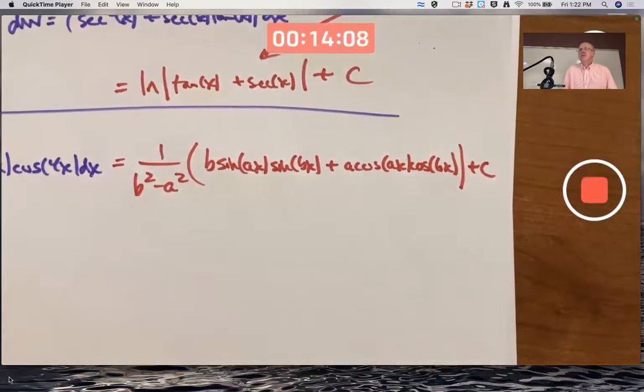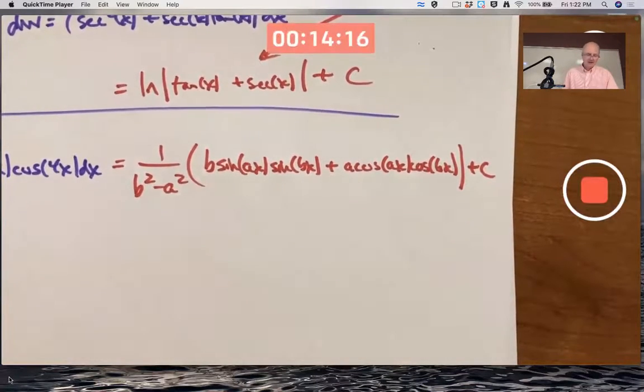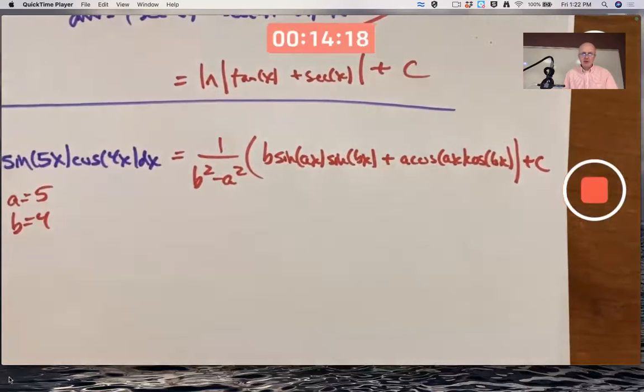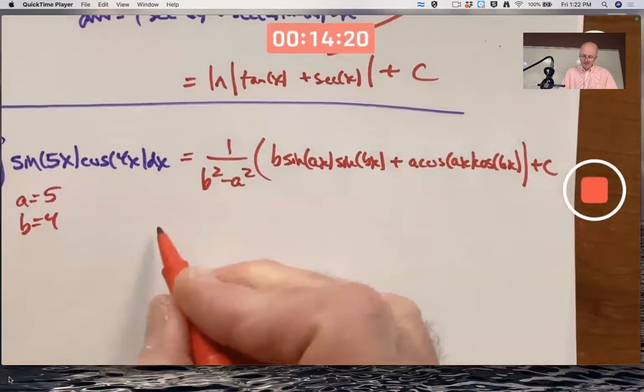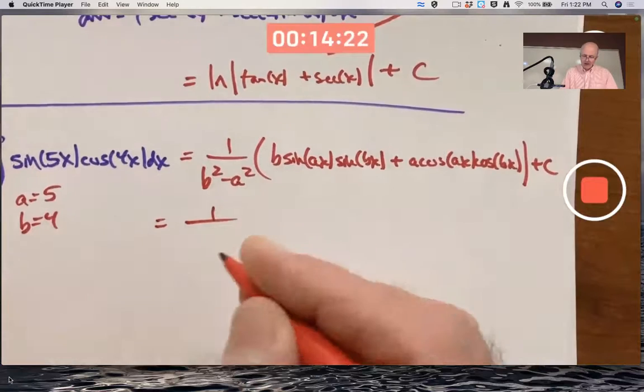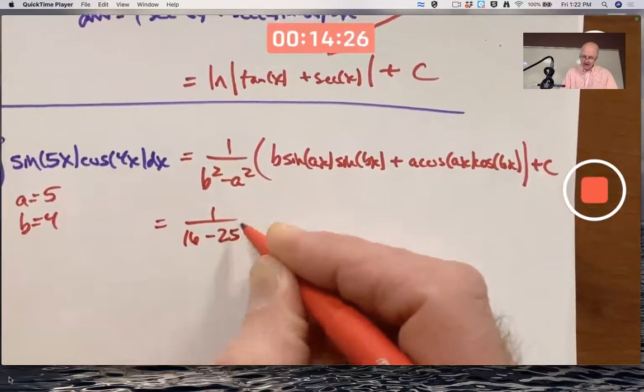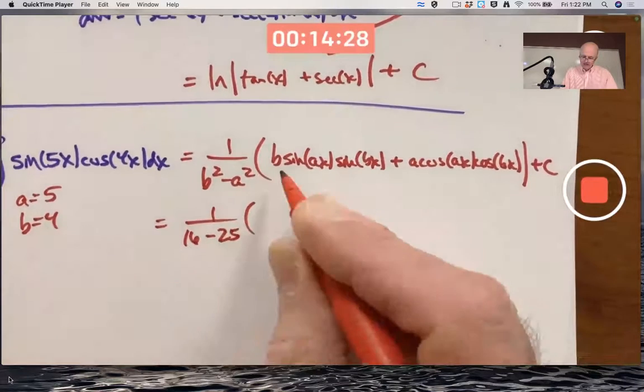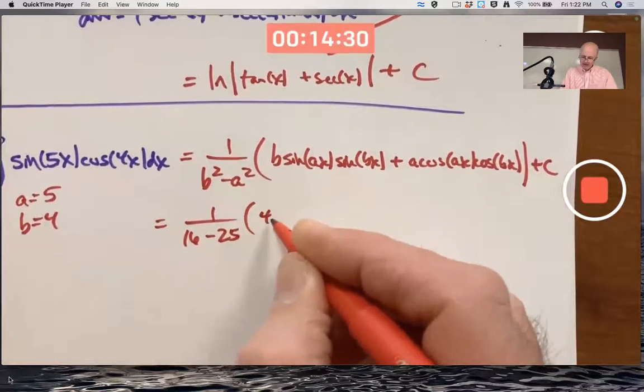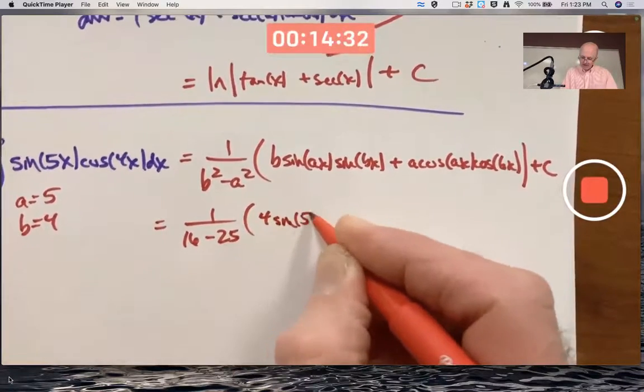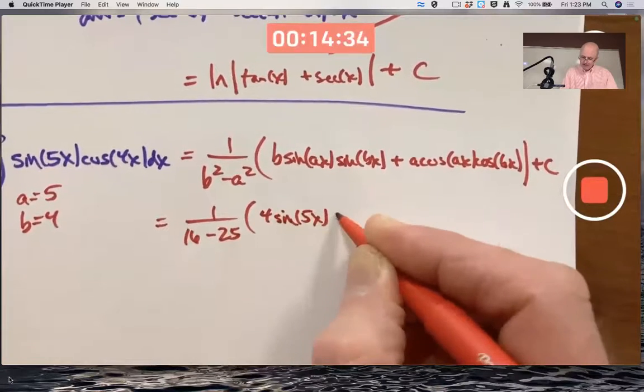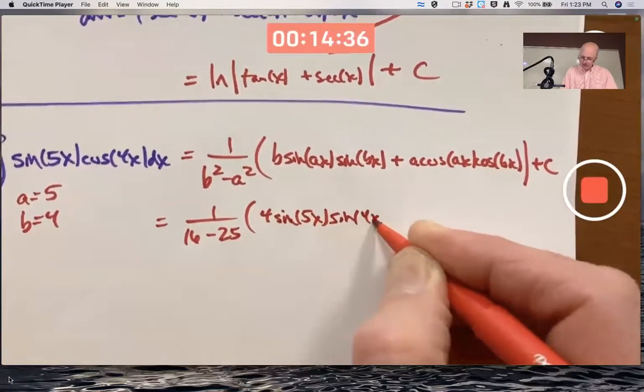Okay. Not something you have to know for the gateway, by the way. This is not something you need to know for the gateway, but it does come up sometimes in some applications. So now I'll use this with a equal to 5 and b equal to 4. So I'll get 1 over b squared is 16, a squared is 25, b is 4, a is 5. Just plug the numbers in.